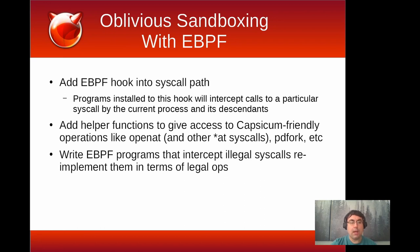Putting this together: I've added an eBPF hook into the syscall path, and I allow bytecode programs to intercept particular system calls made by chosen processes. I'll add helper functions to my eBPF VM that give access to Capsicum-friendly functionality — stuff like openat and all the other 'at' functions, realpathat, pdfork, and other kernel functionality. It's important to remember that while I've named these the same as existing functions because their functionality is virtually identical, there are slight differences between the helper function and the original they emulate, which I'll discuss through examples.